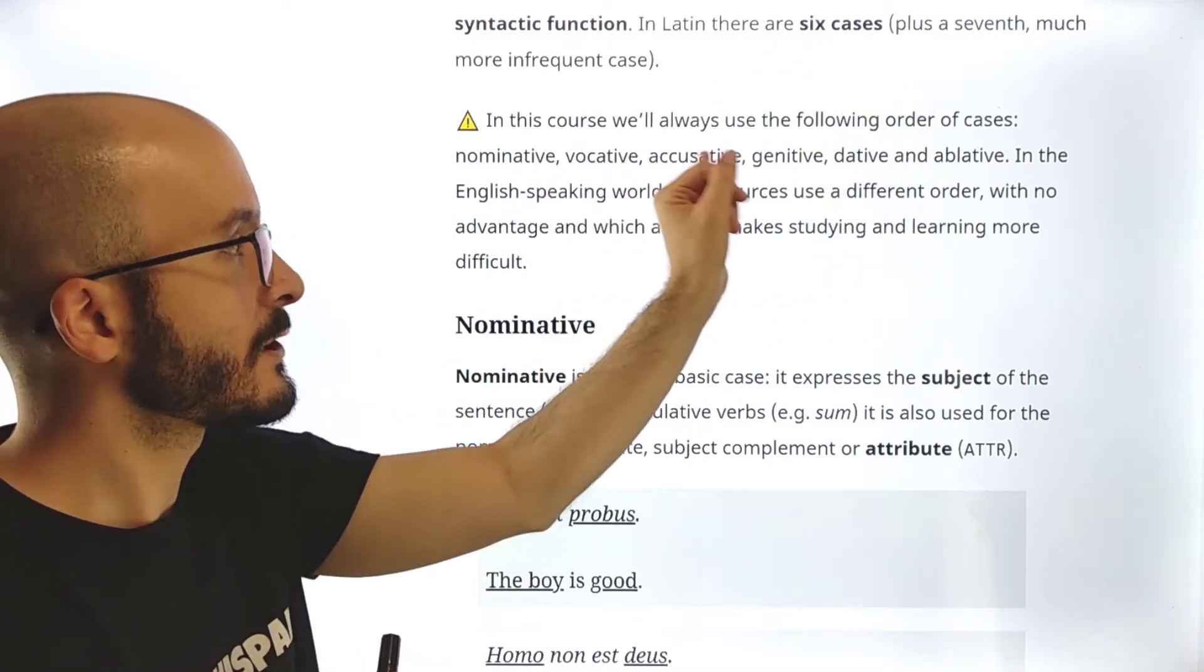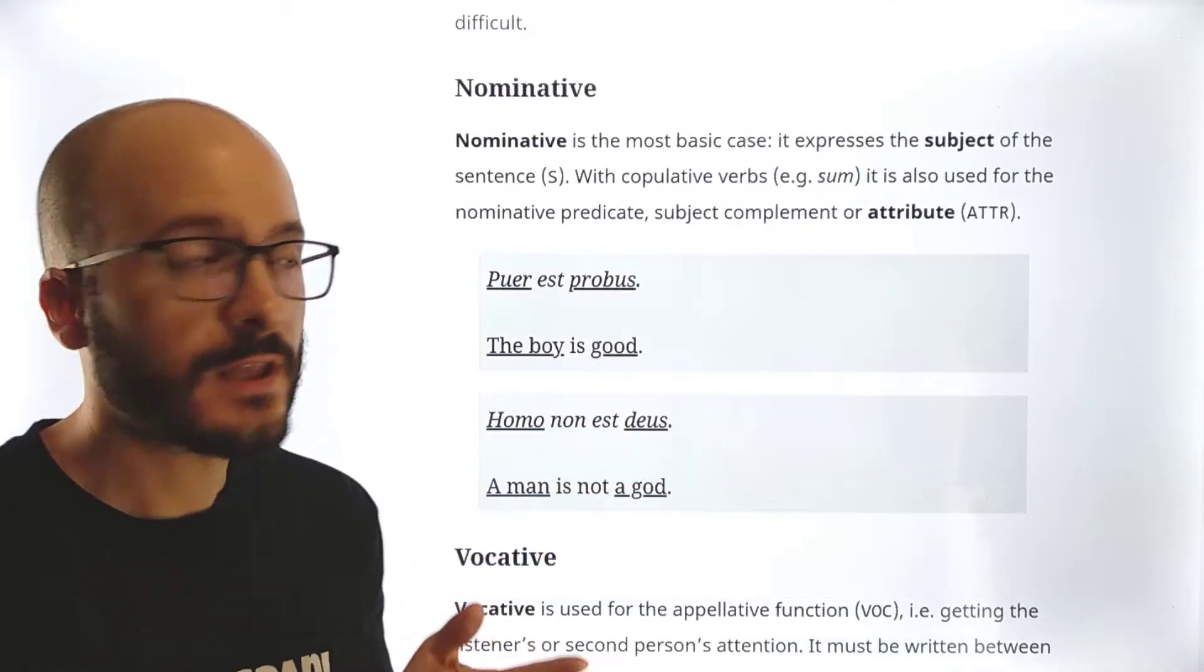So we are not going to be using this other Anglo order. We're going to be using this order. Six cases: nominative, vocative, accusative, genitive, dative, ablative. And we start with nominative.